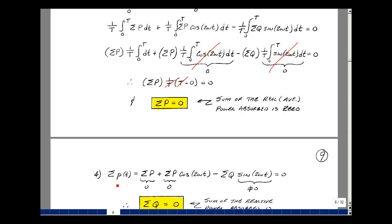Let's go back to our time domain equation again. And let's do the summation of overall terms, assuming we're absorbing power. So I've got the summation of P, summation of P cosine 2 omega t, and then minus the summation of Q sine 2 omega t.